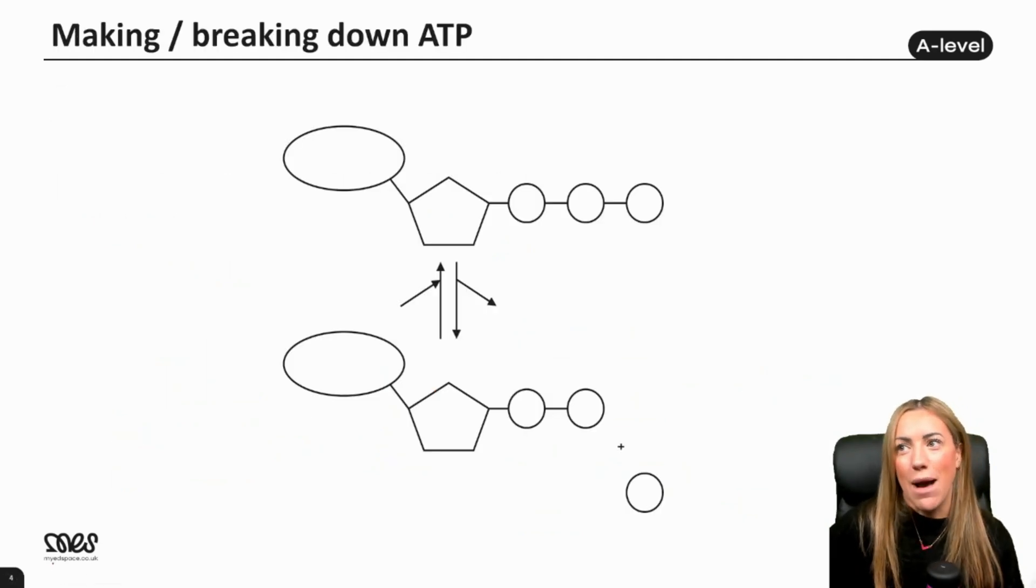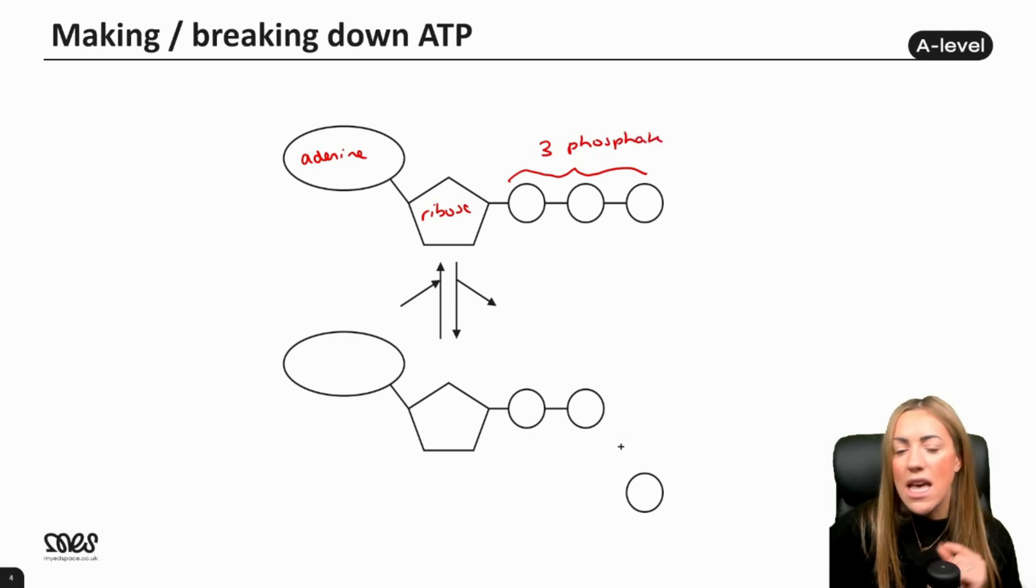Let's move on and think about how we can make or synthesize ATP, and how we can break it down or hydrolyze ATP. You'll notice these ATP molecules have been drawn the opposite way around. For AQA, they don't really mind which way you draw your ATP molecule. So here we've got the ribose sugar, the base adenine on this side, and the three phosphate groups on this side.